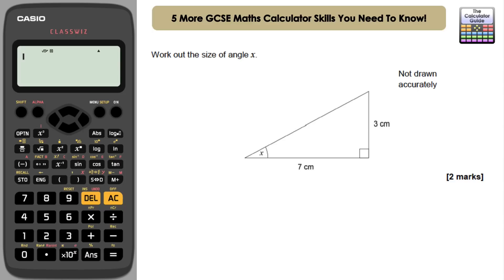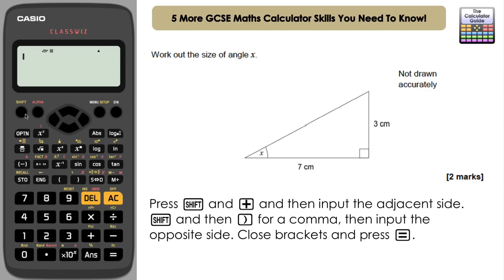Work out the size of angle X. We have a right angle triangle, angle X, and we have an opposite side of three centimeters and an adjacent side of seven centimeters. If we press shift and then poll, which is the add button, and then what we want to do in here is to insert the adjacent side, which is seven, and then we want a comma, shift and right brackets, and then the opposite side, three, and we're going to close brackets here, press equals.